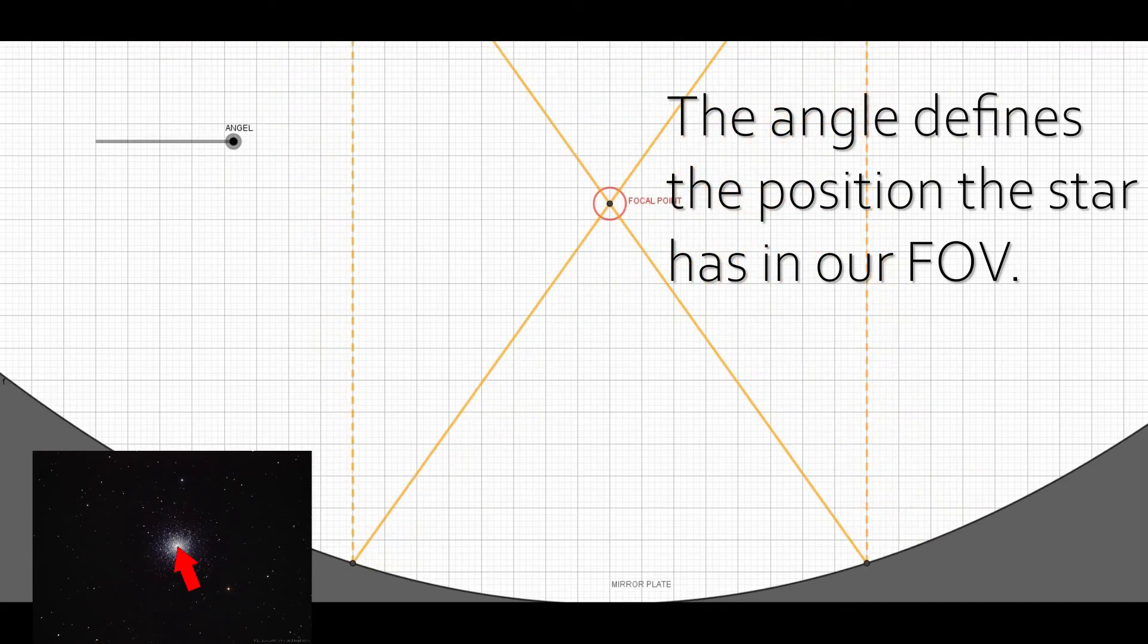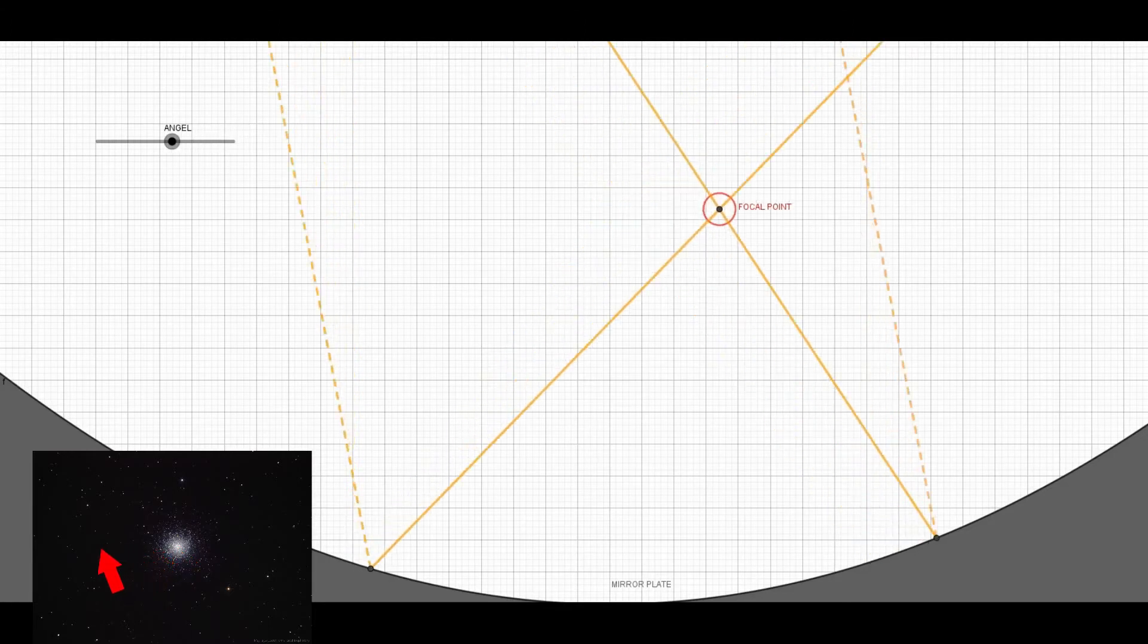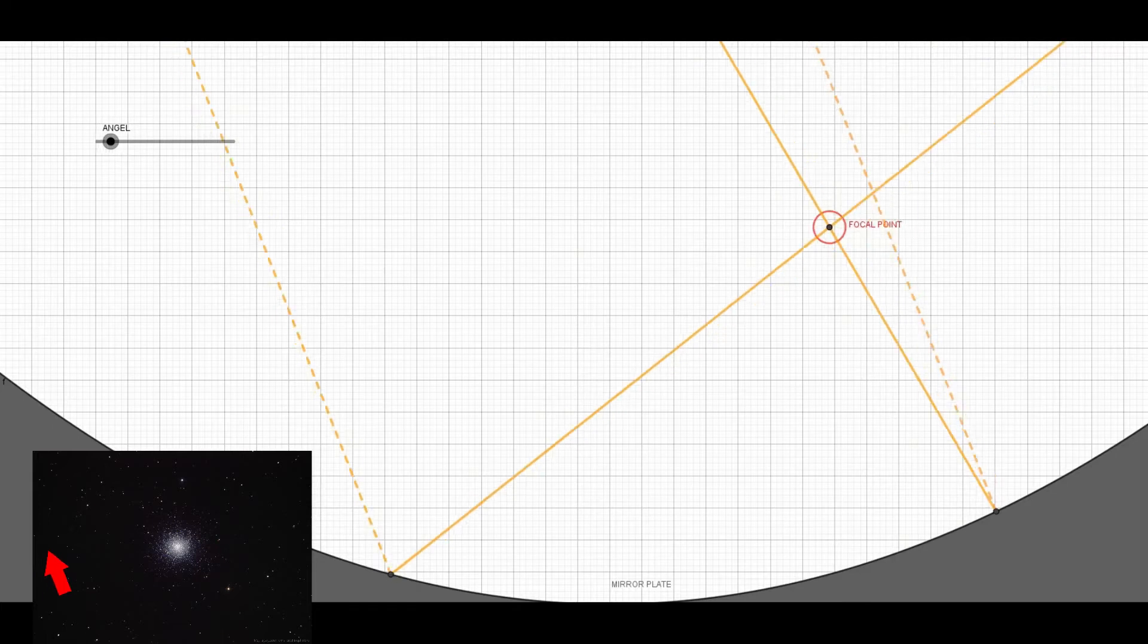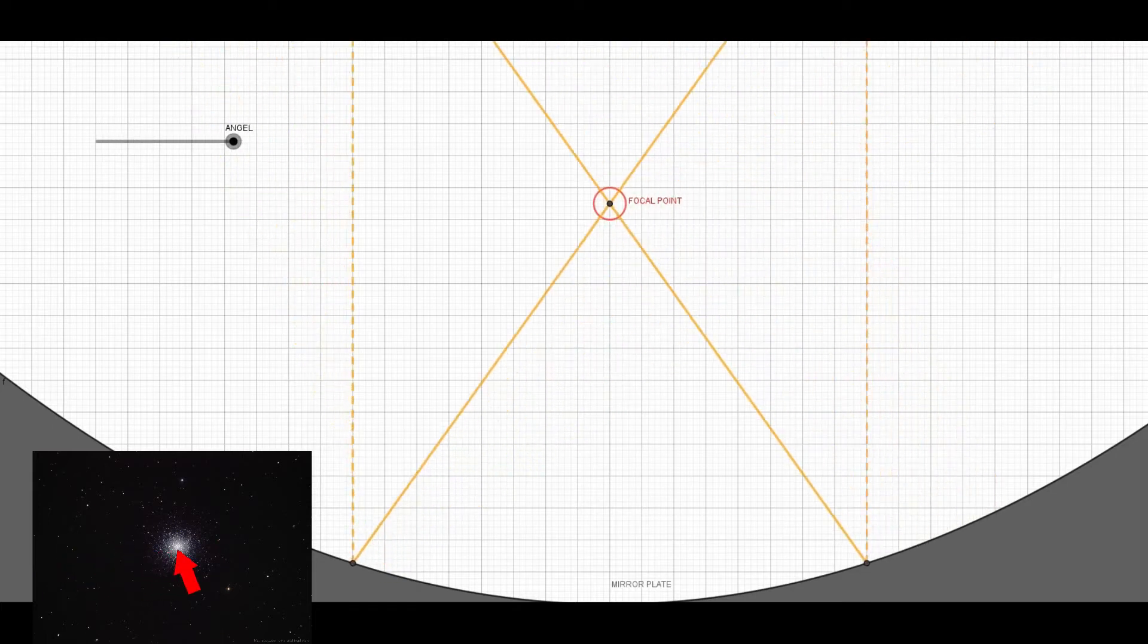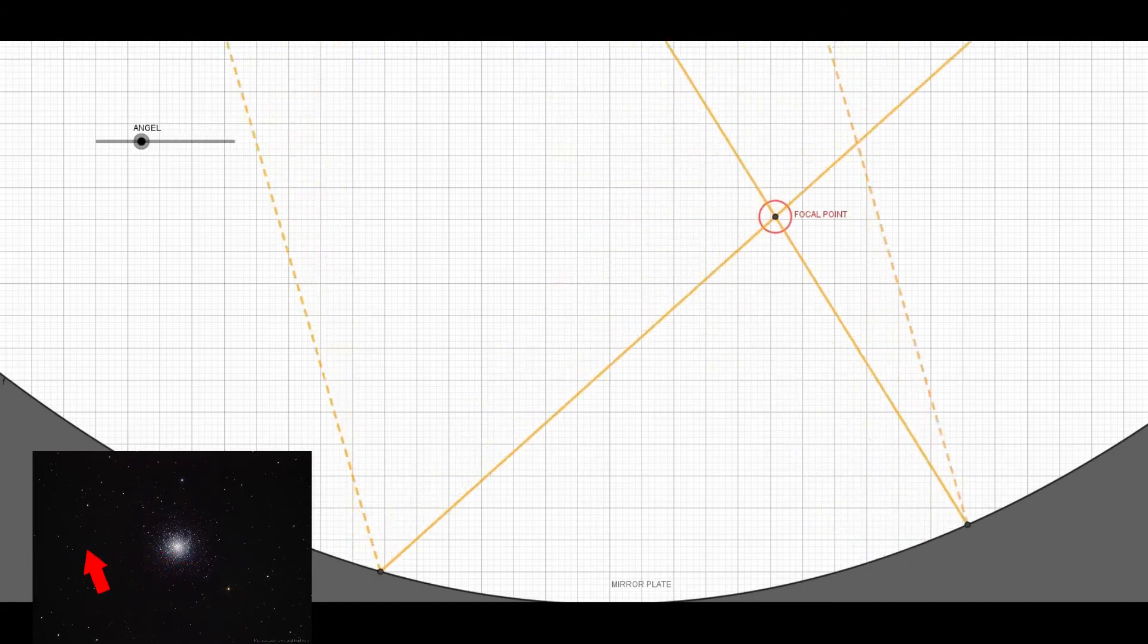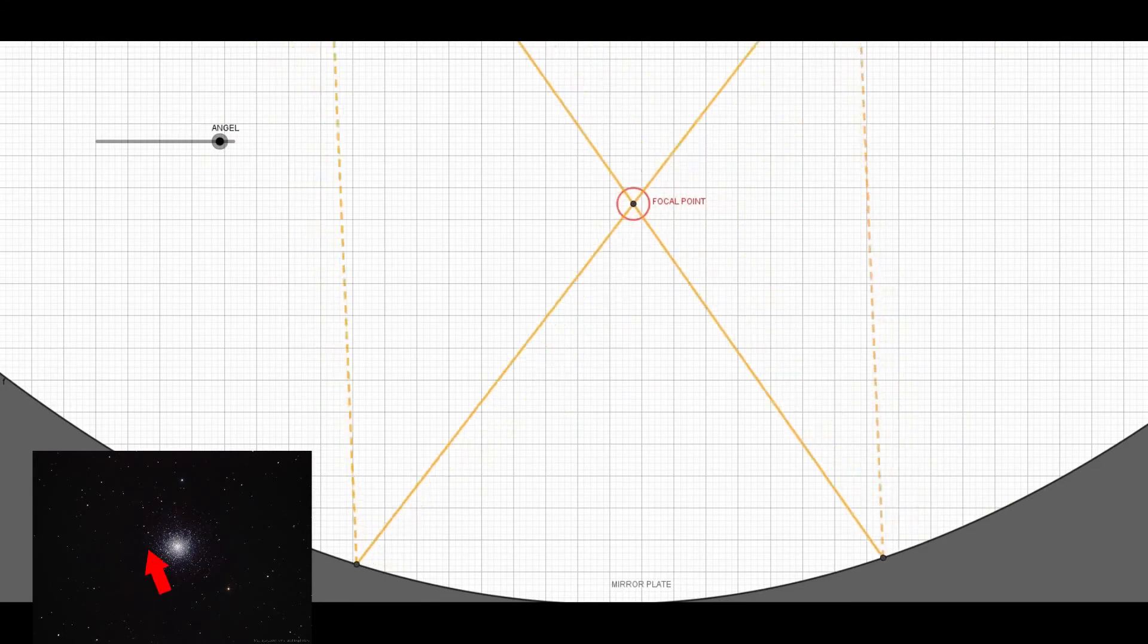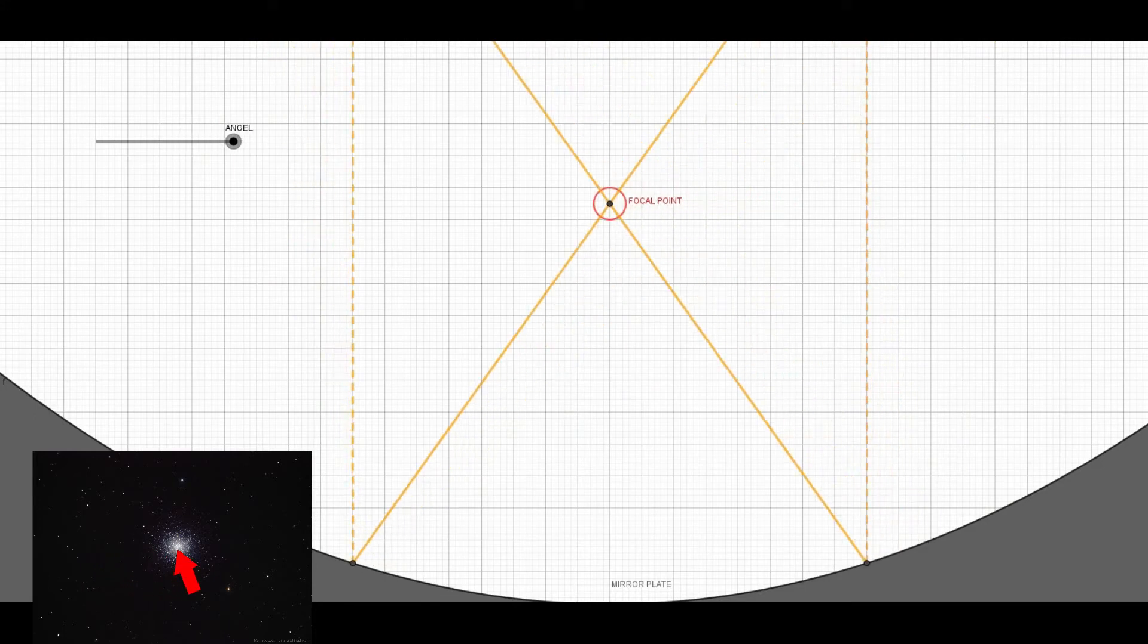You see, so the angle defines the position the star has in our field of view. Every star then has its own focal point, and I mean that makes sense. If you place a sensor at the focal plane, then you don't want all stars to be focused in one point. Every star shall be focused onto its own focal point to be distinguished in the image taken. And that's true for both mirrors and lenses. I just created a simulation of a mirror to demonstrate it for you.